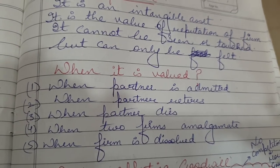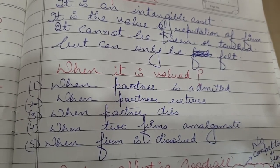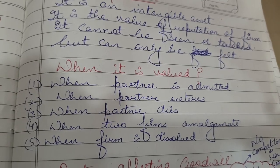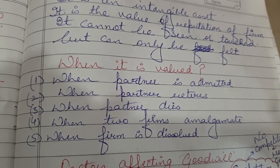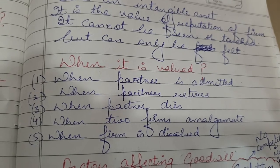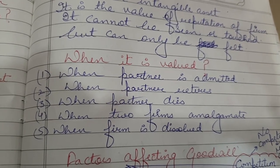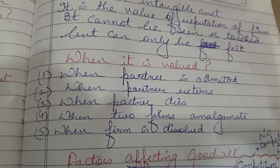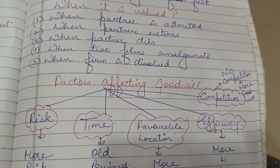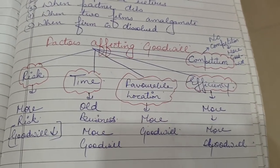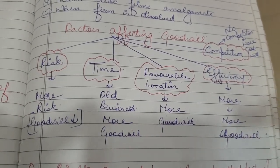When does the question of goodwill valuation arise? Goodwill valuation is required when a partner is admitted, when a partner retires, when a partner dies, when two firms amalgamate together, and when the firm gets dissolved. What are the factors affecting goodwill?